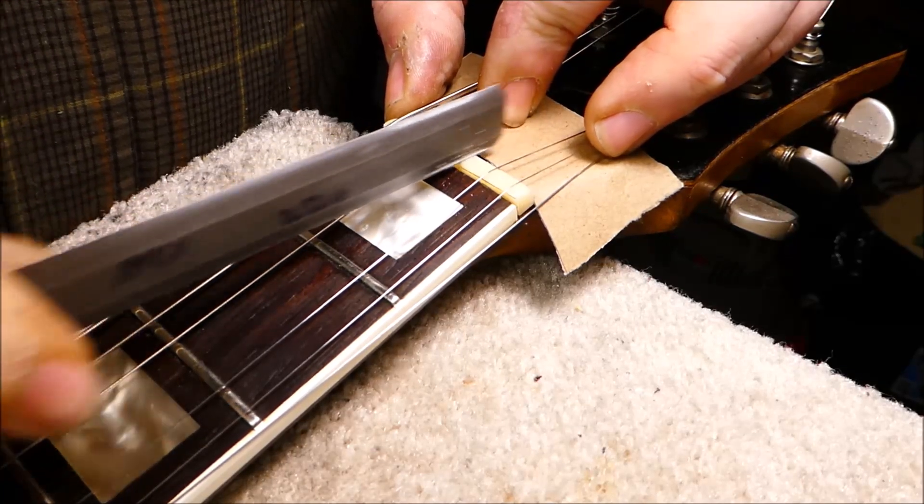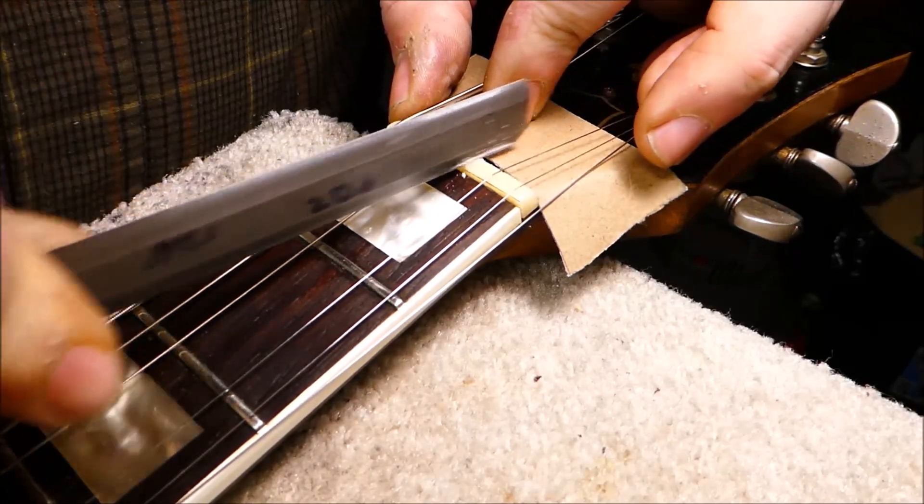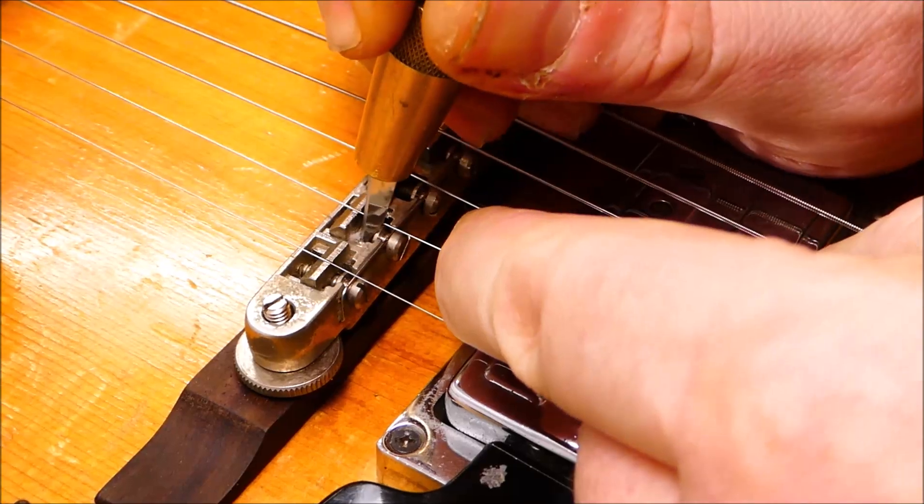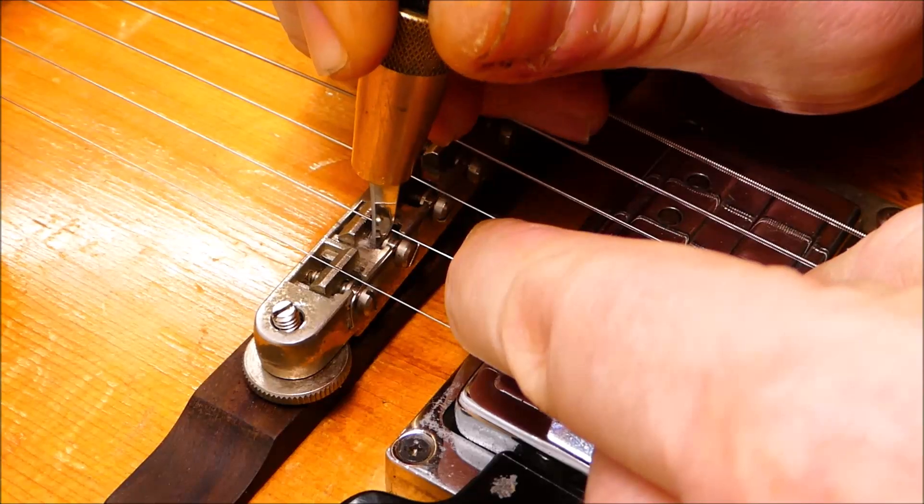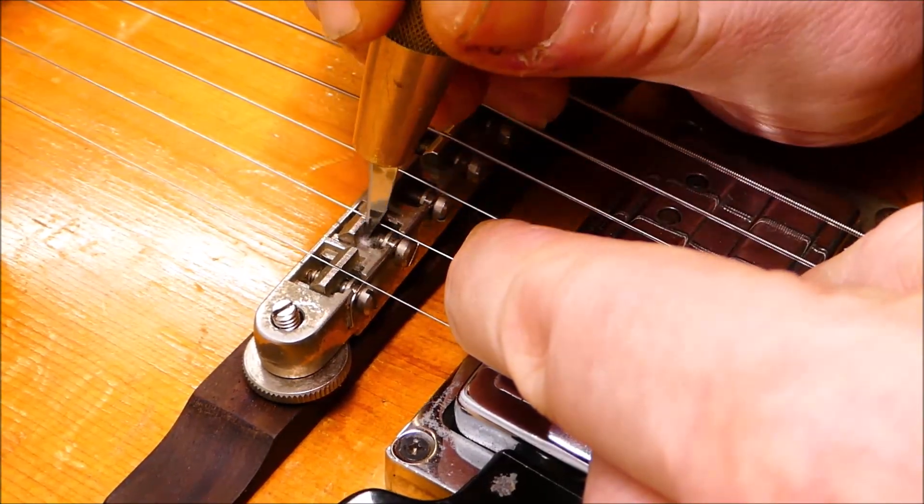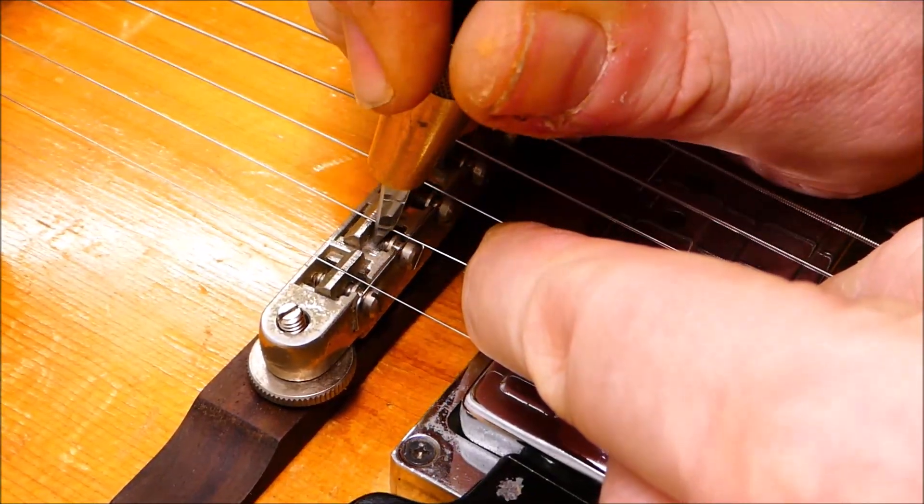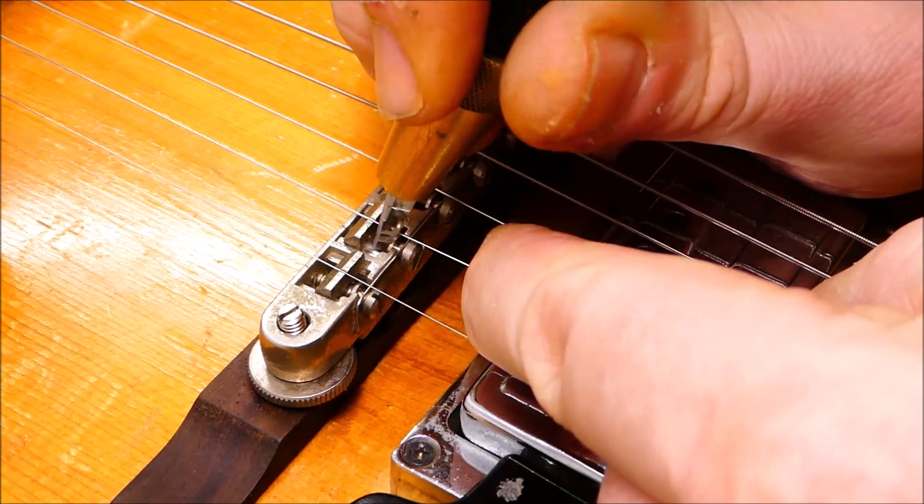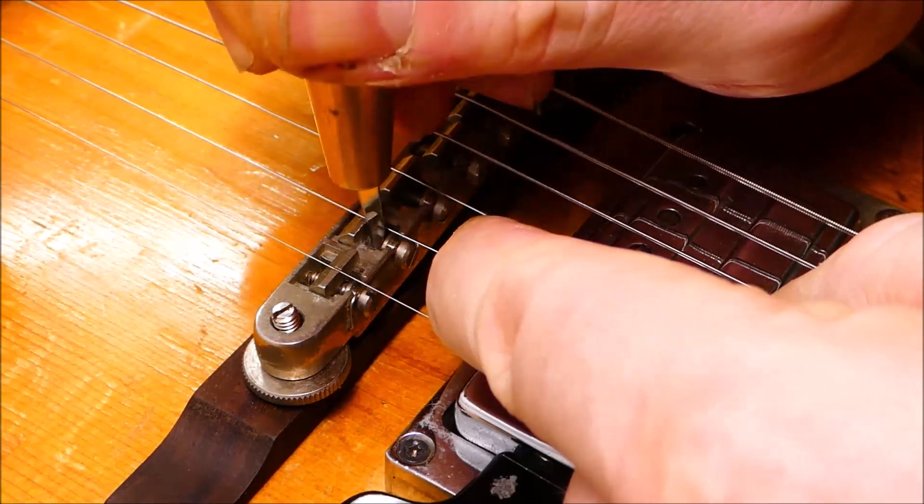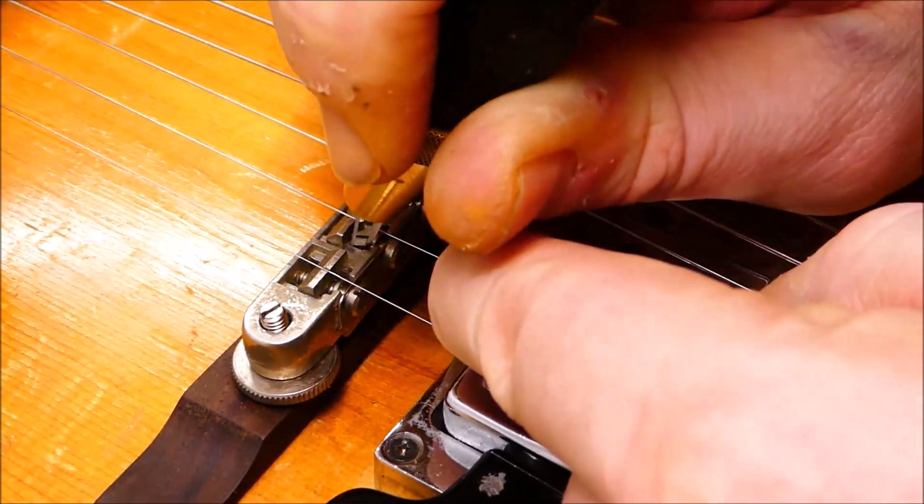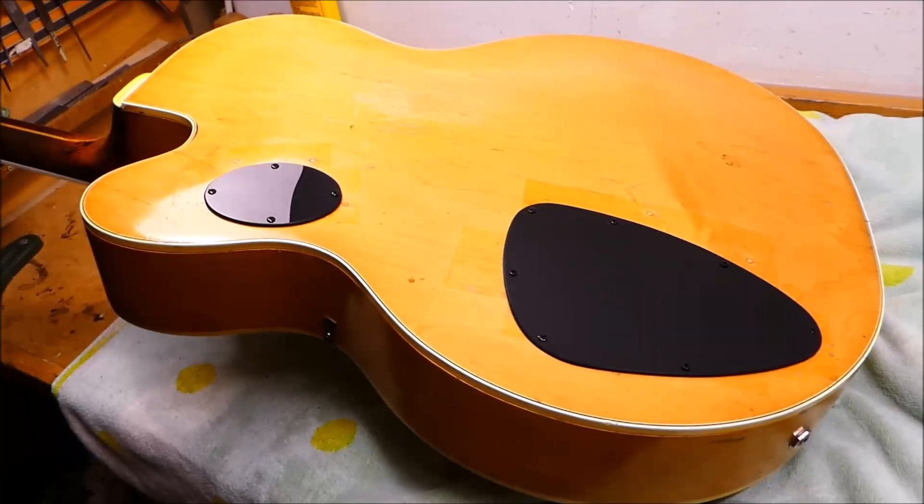These old saddles were very loose in their tracks. You could wiggle them back and forth about a 32nd of an inch and they were causing a lot of buzzing and sympathetic vibration. So what I'm doing here is stuffing some cotton that I pulled off the end of a q-tip into the area between the saddle and the side of the slot wall. This will hold them tight and also dampen any vibration that's going on, much better than it was. There we go.